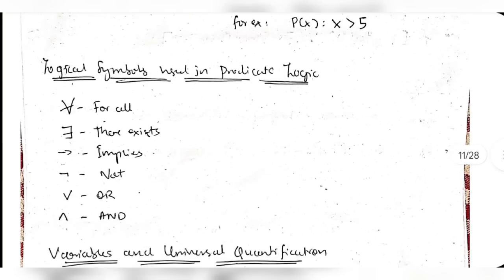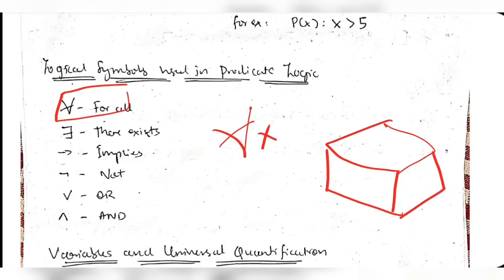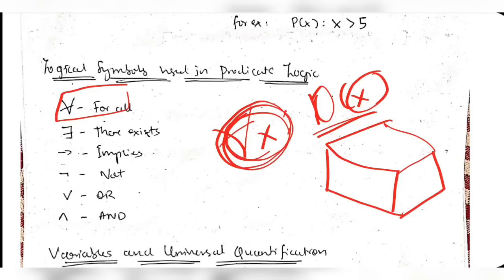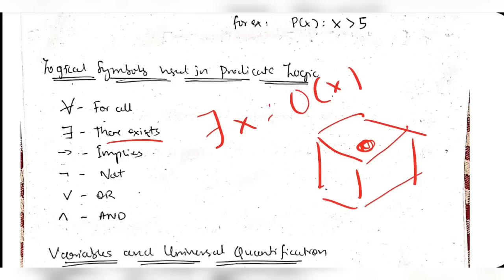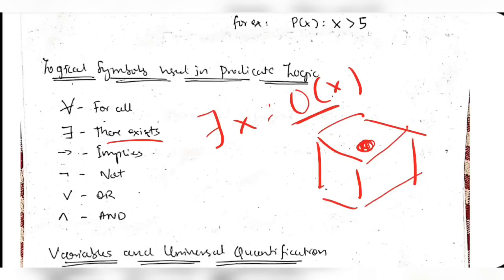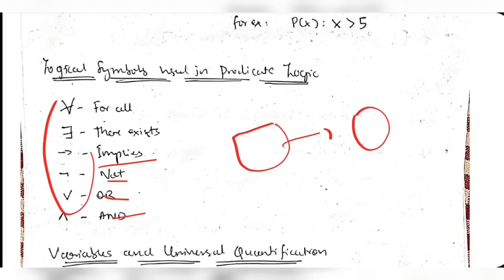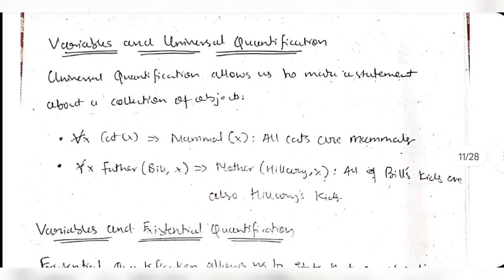Some symbols used in predicate logic: ∀ means 'for all' - for example, a box of oranges is represented as ∀x o(x) meaning 'for all x, x is an orange in the box.' ∃ means 'there exists' - if a shopkeeper misled you and there is only one orange, you use ∃x meaning 'there exists at least one orange in the box.' The implication arrow (→) means 'if...then,' and you also have not (¬), or (∨), and (∧).